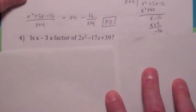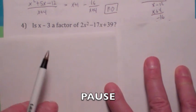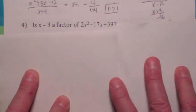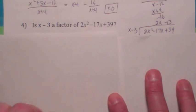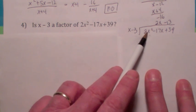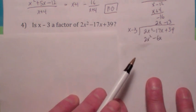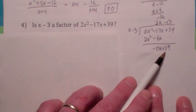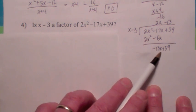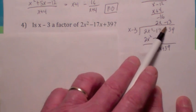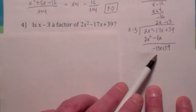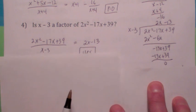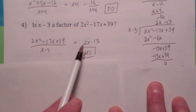Try this one — use long division to see if this polynomial is a factor of this one. When you do that, you start by asking: what do you multiply x by to get 2x squared? The answer is 2x. Multiply each term by 2x — you get this. Subtract and the x squared terms cancel. You get negative 13x plus 39. What do you multiply x by to get negative 13x? Negative 13. Multiply both terms by negative 13 — everything cancels. So yes, it's a factor. When you divide this polynomial by this one, you just get 2x minus 13.